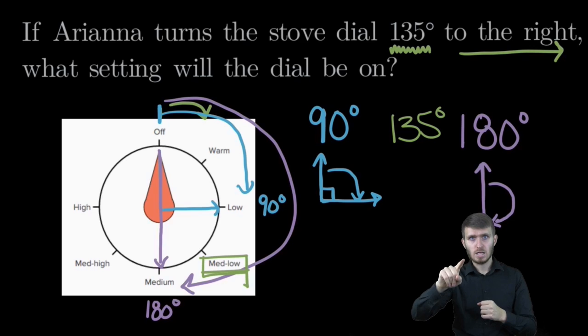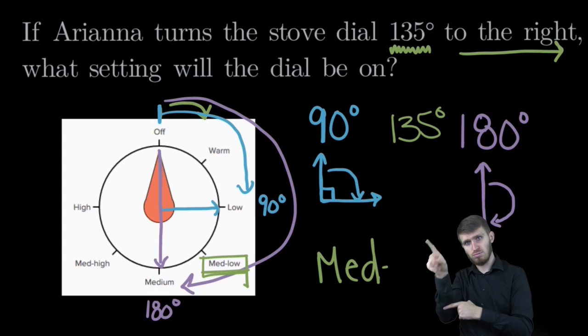So turning our stove dial 135 degrees to the right, we'll set our stove to medium-low.